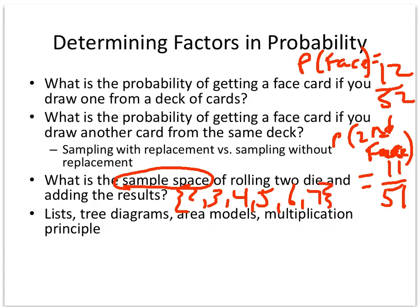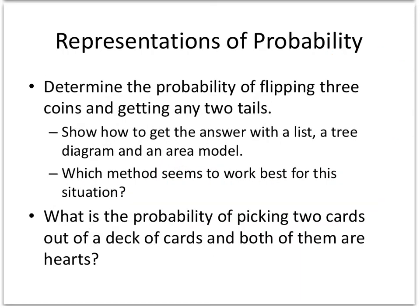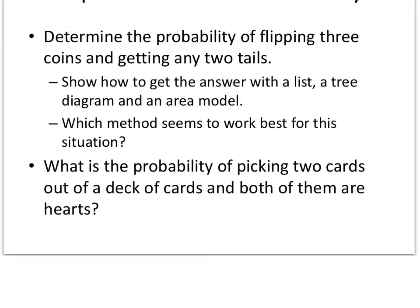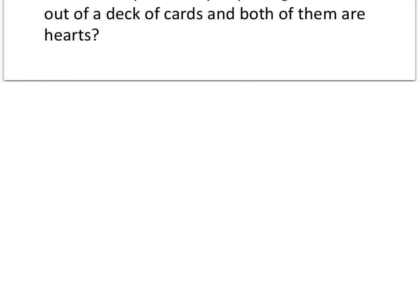We do a lot of questions with probability involving lists, tree diagrams, area models, and multiplication principle, which we will talk about more as we go on into this unit. So here's a problem: determine the probability of flipping three coins and getting any two tails. So how do they answer this with a list, a tree diagram, and an area model? And then you've got to make a decision about which one seems to work best. Okay, so I want to flip three coins and get two heads.